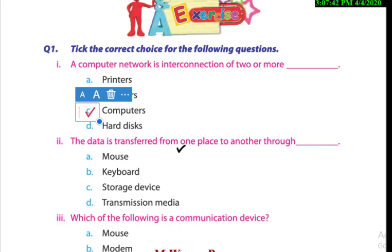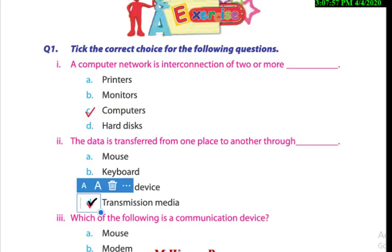The data is transferred from one place to another through what? How can we transfer our data from one place to another? We cannot send it through a mouse, not through a keyboard, and not through storage devices. We can only send our data through transmission media.